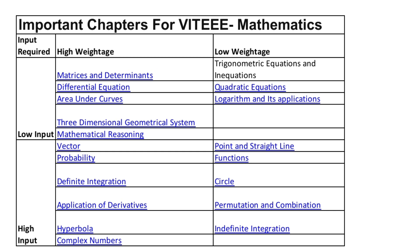In VIT, the weightage for those topics is high. Now for low weightage topics that don't require much effort: trigonometry, quadratic equations, logarithm and its applications. For high input topics where you have to manage more with high weightage: vectors, probability, definite integration, application of derivatives, hyperbola, and complex numbers. High input but lower weightage includes: points and straight lines, functions, circles, permutation and combination, and indefinite integration.